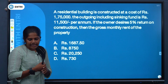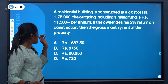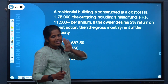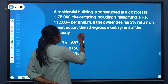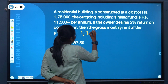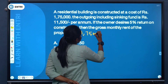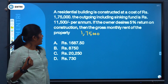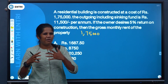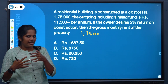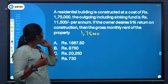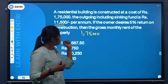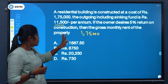Next question — question number 2: A residential building is constructed at a cost of Rs. 1,75,000. The outgoings including sinking fund is Rs. 11,500 per annum. If the owner decides 5% is returned from the cost of construction, find the gross monthly rent of the property.